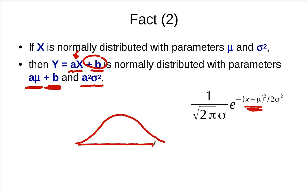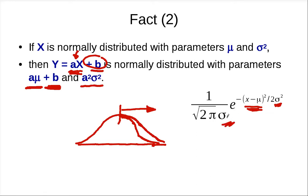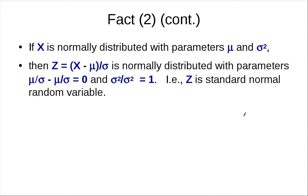If you multiply X by a, you increase the rate at which the density drops. As you move to the right from the mean, the density drops at a certain rate. If you multiply X by a, the density drops faster — if a equals two, it drops twice as fast. Then you need to do scaling so the total probability remains one.